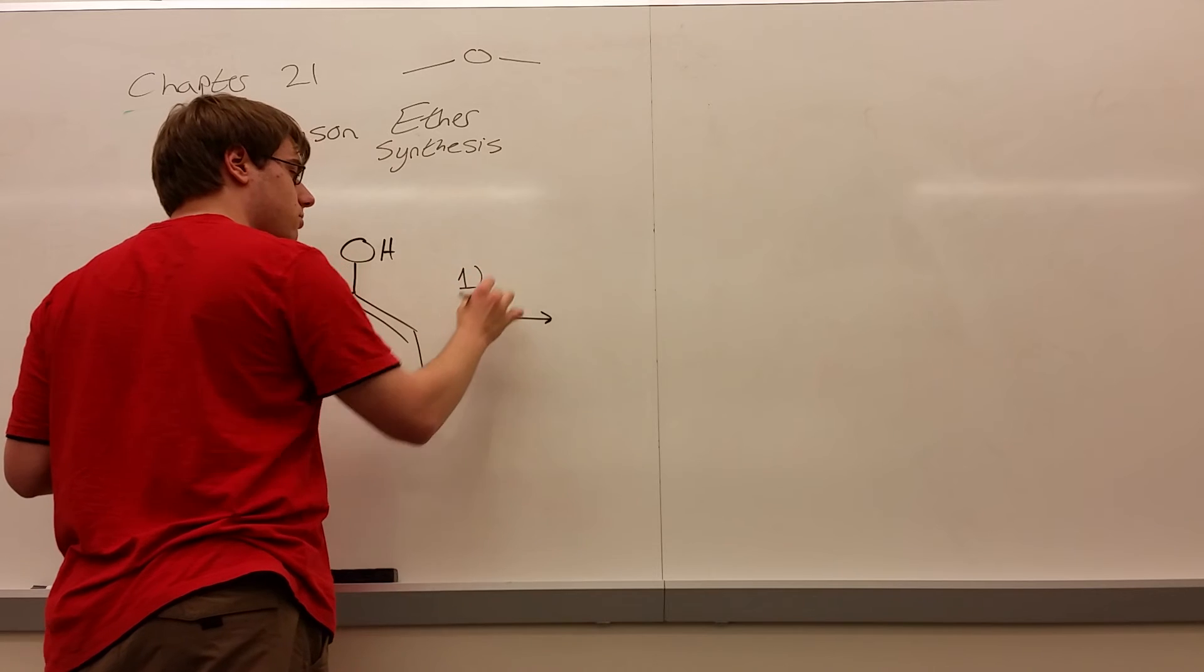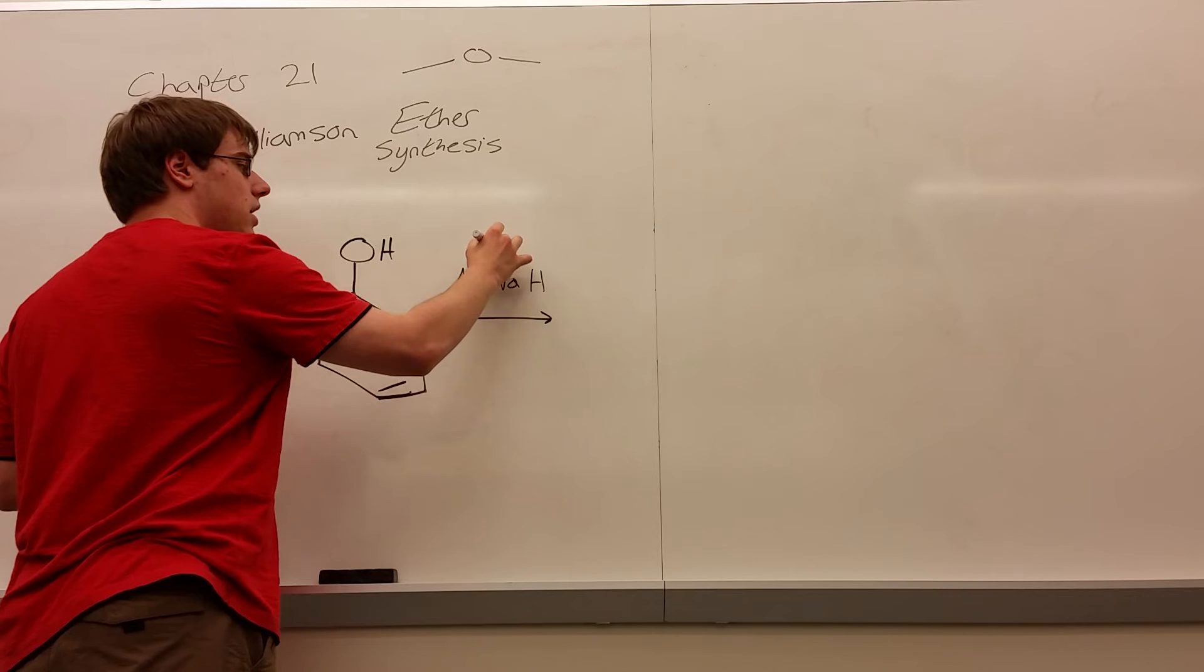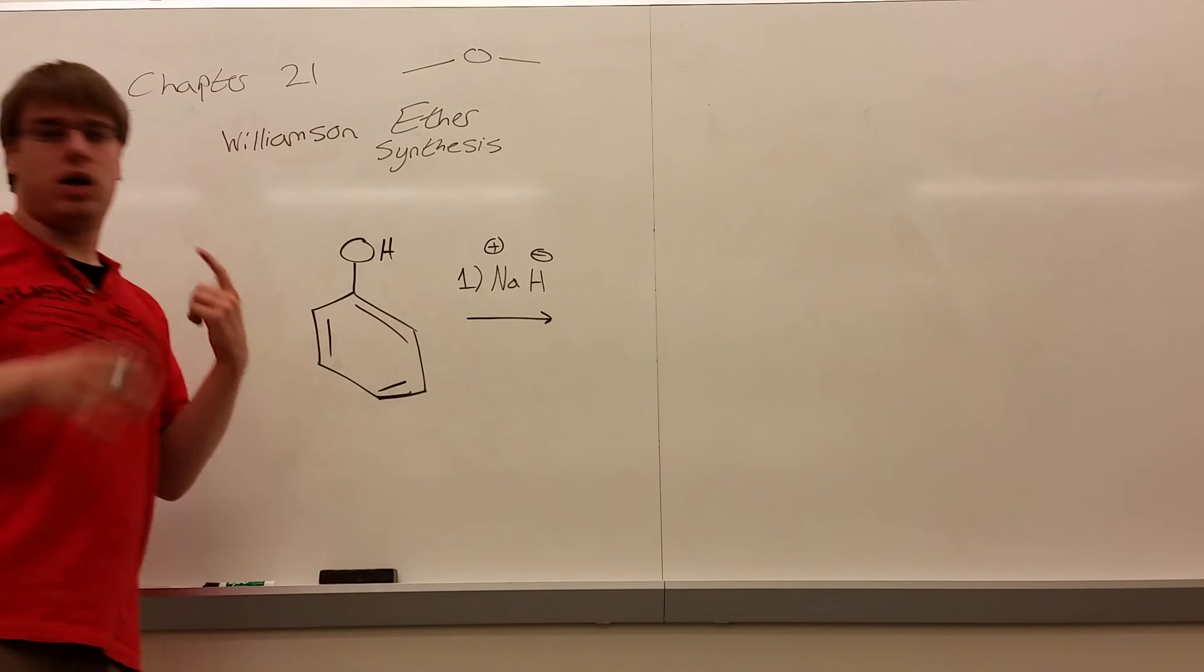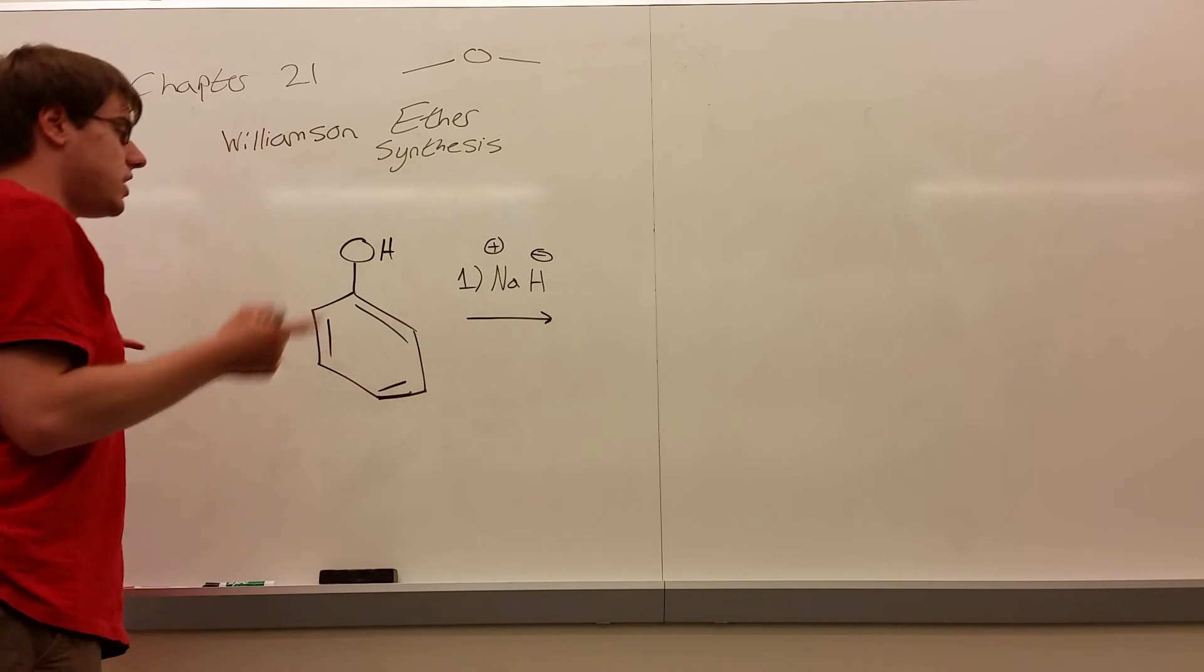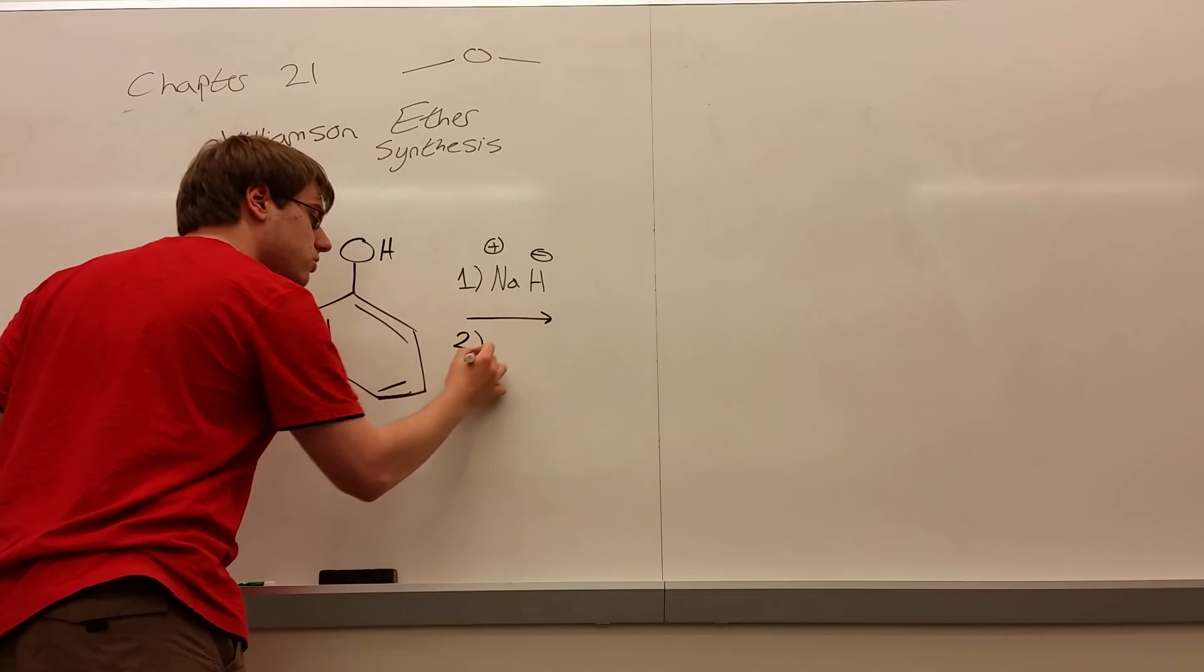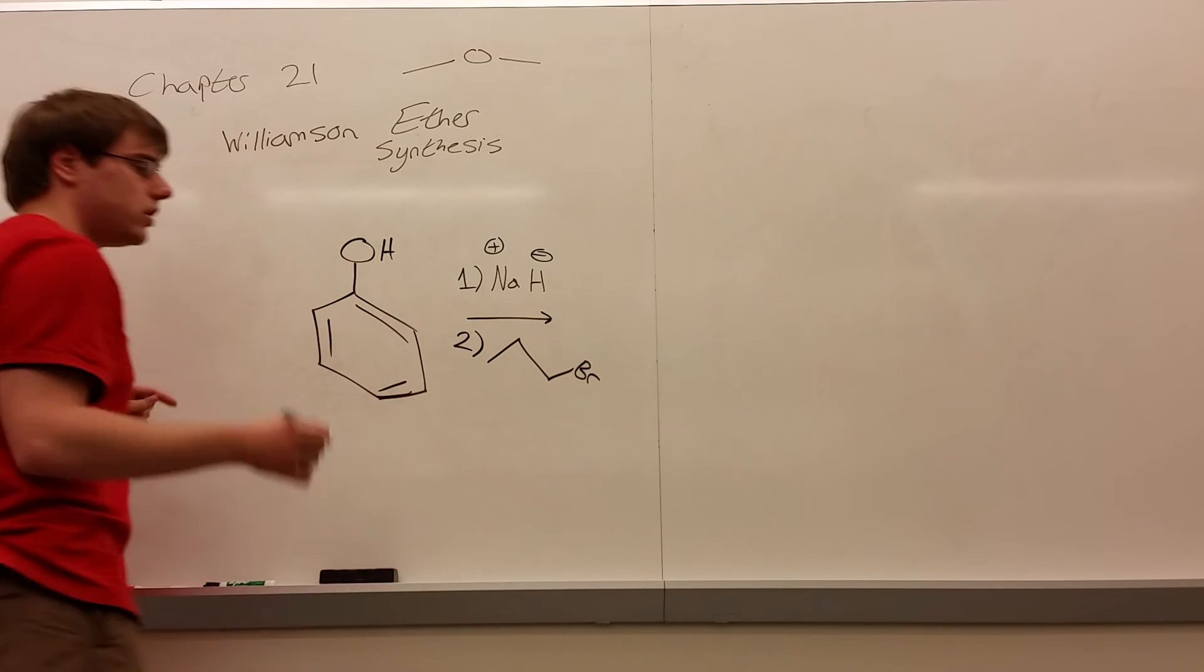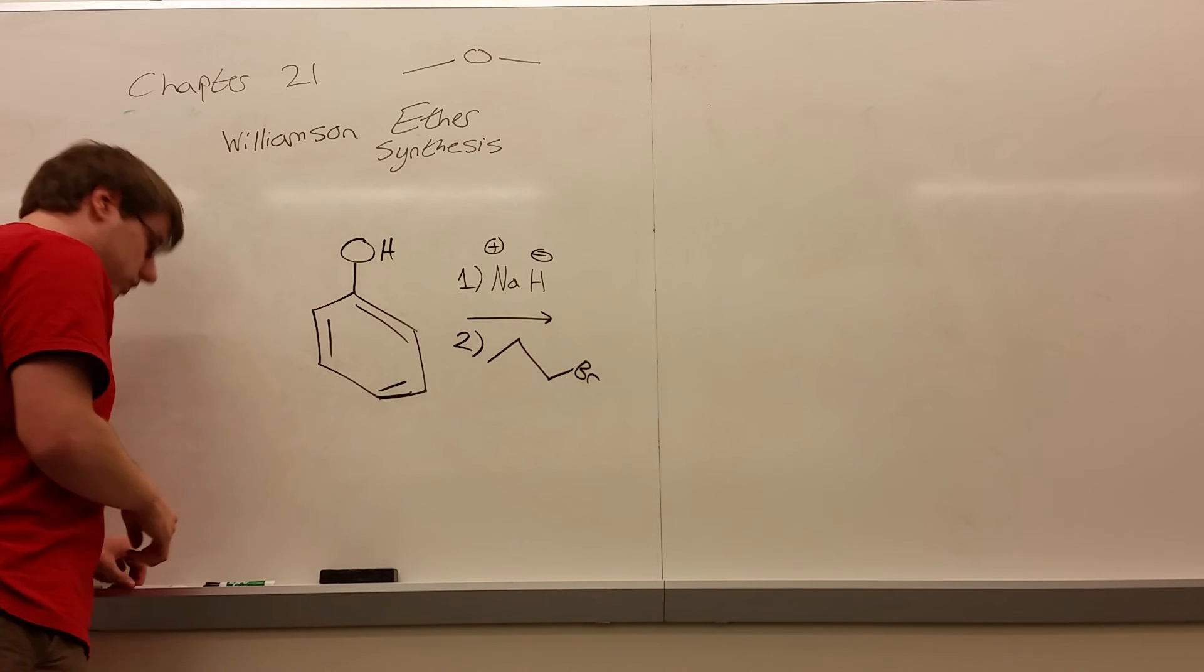What do you need for the Williamson ether synthesis? Step one, a strong base, typically NaH, but honestly it's not limited to that. Remember Na positive, H minus. But it could be, I think I've seen OH minus even used, so it doesn't have to be limited to this. And then step two is some carbon chain with a leaving group on it, so let's say a bromine.